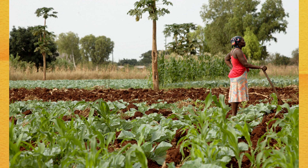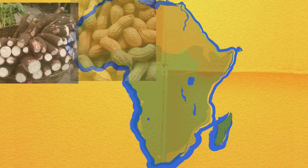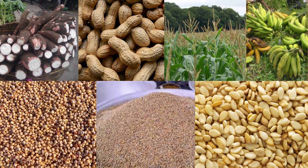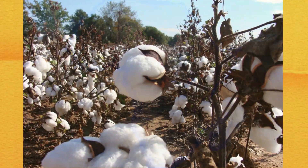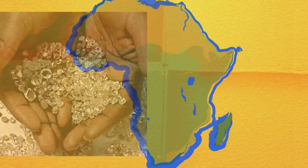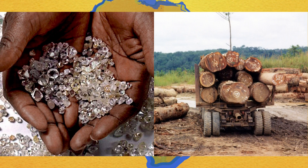Agriculture is the main contributor to the economy of the country, with the cultivation and sale of food crops such as cassava, peanuts, maize, sorghum, millet, sesame, and plantain. Cotton is the principal cash crop export. Diamonds and timber also contribute to the economy.